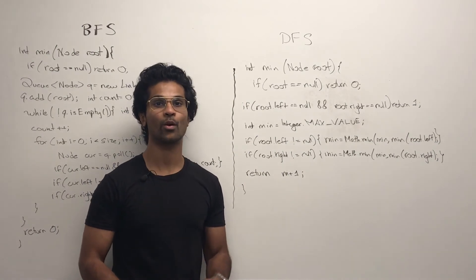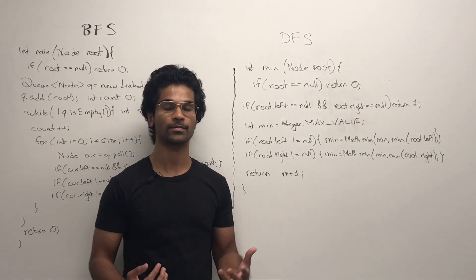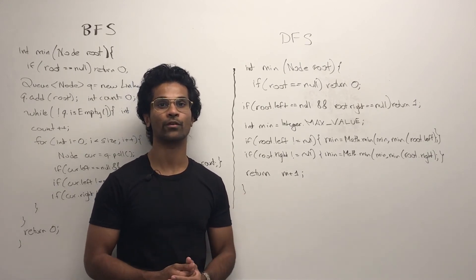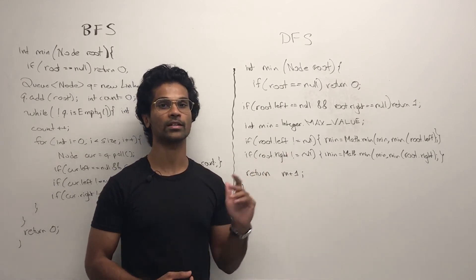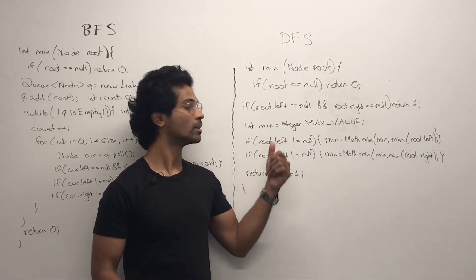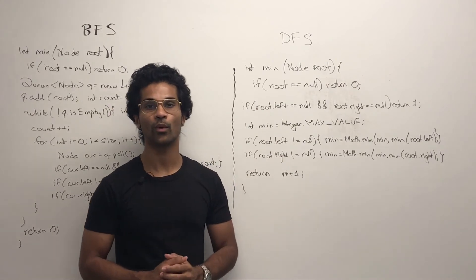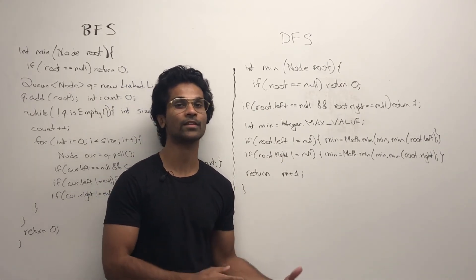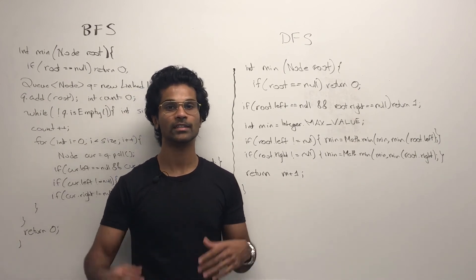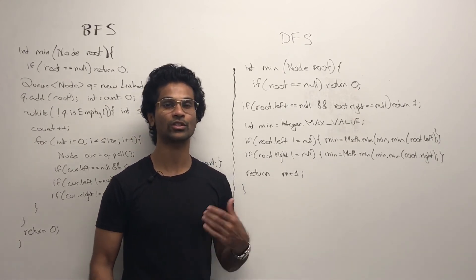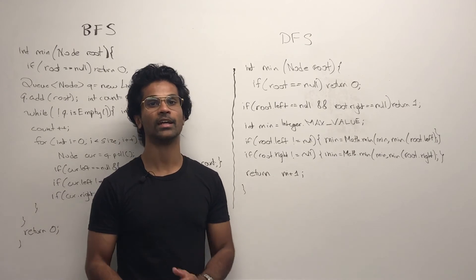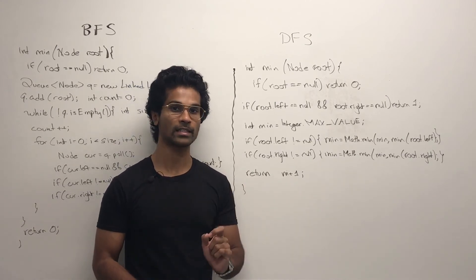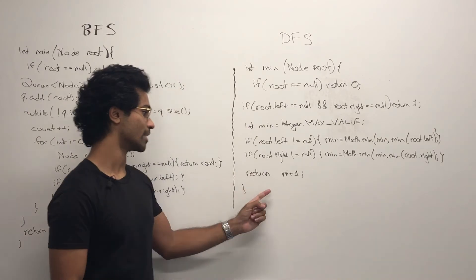For the DFS code, we first take care of the base cases. If the root is null, we return 0. If the root is a leaf node with left and right as null, we return 1. Otherwise, the node we're visiting is going to recursively ask its left and right child for their minimum depth, and check it with what it has. Then it takes the minimum of left and right, and adds 1 to return to its parent.